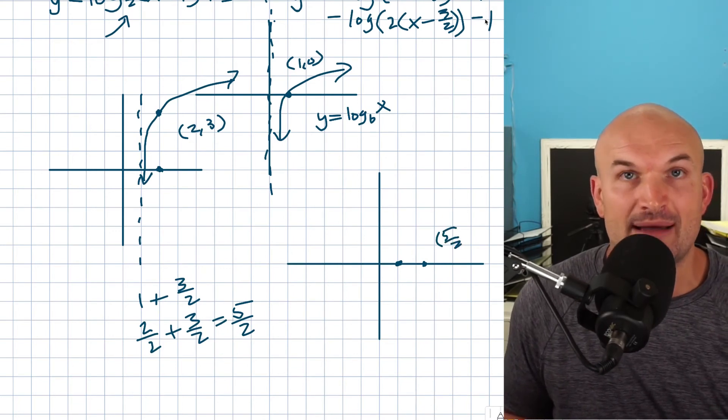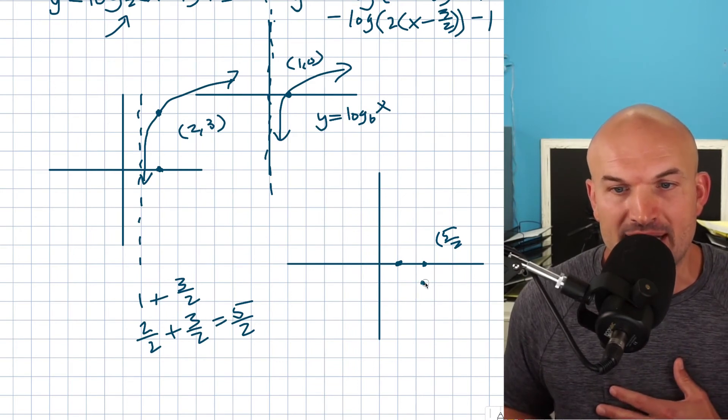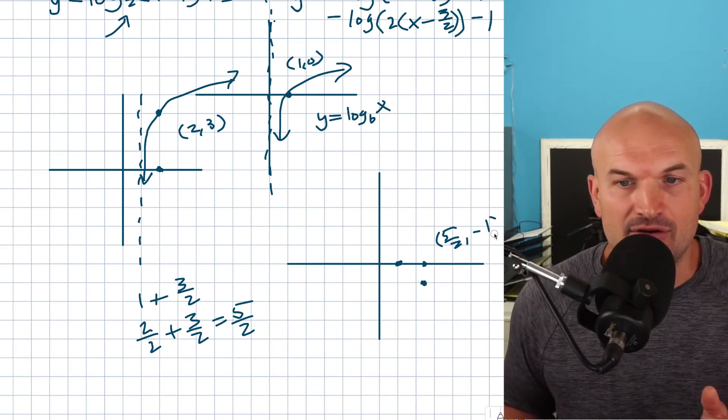And then what I can do is now apply my vertical shift, which is now going to be down negative 1. So that's going to take me over there. So this is my new point. So I'm just doing things step by step. So 5 halves comma negative 1.